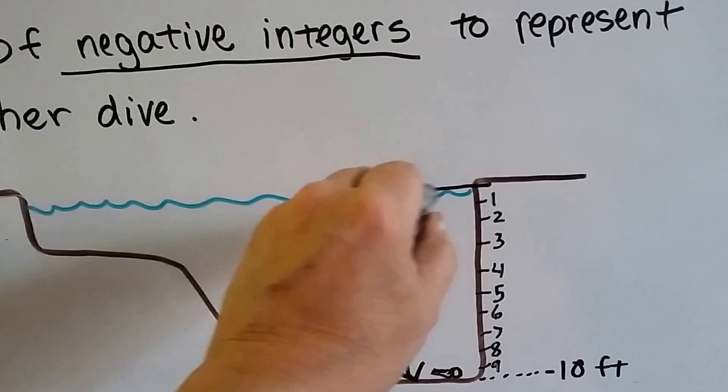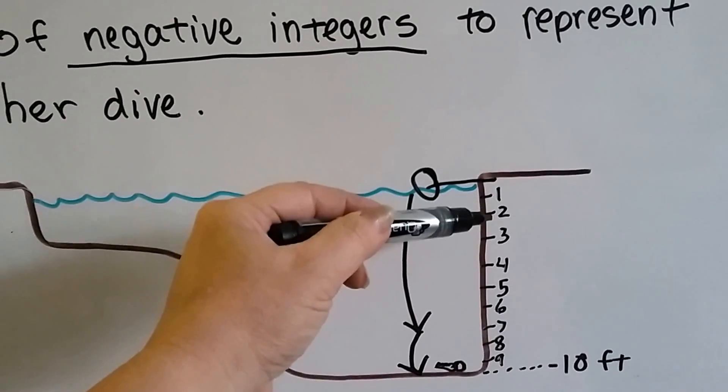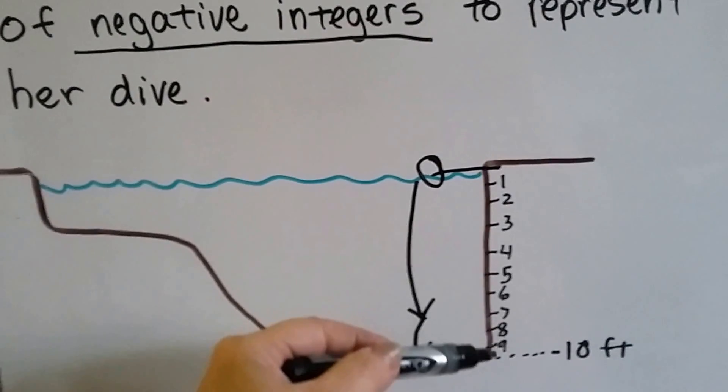So if this water level is zero, then she's one feet, two feet, three feet, four feet. See, she's negative.